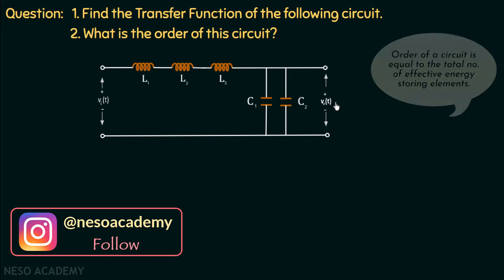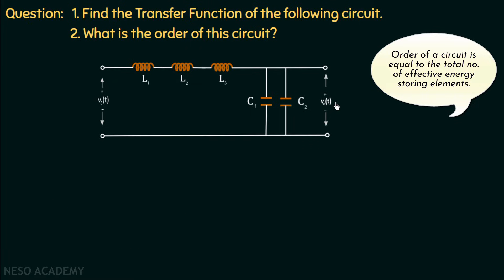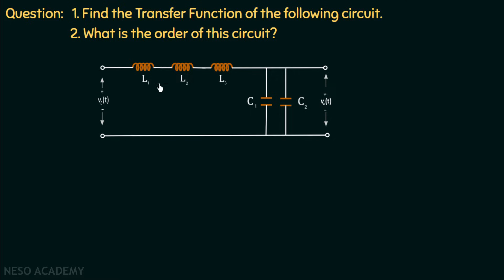The order of any circuit is equal to the total number of effective energy storing elements. So the order of this circuit might appear to be five, because three inductors and two capacitors are connected — three plus two equals five. Pause the video and comment your answer for part two before we continue.